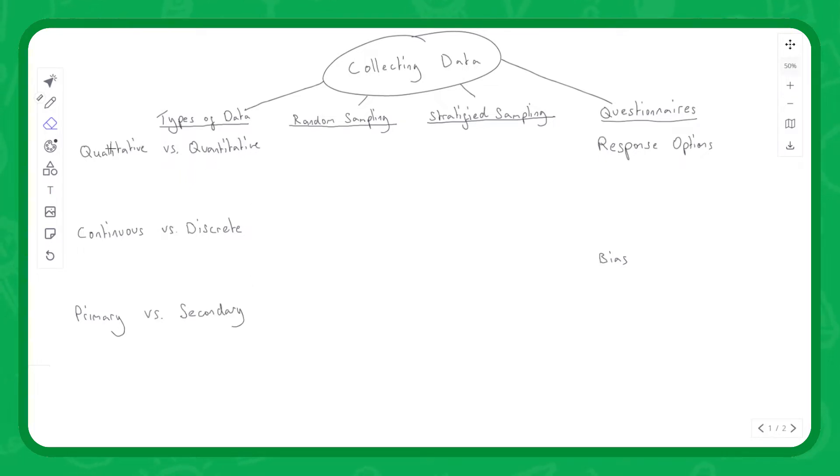The first category is qualitative versus quantitative. Qualitative is non-numerical data—things like diaries, video transcripts, interviews with people, or open-ended survey questions. It's the written word that we're trying to glean information from.